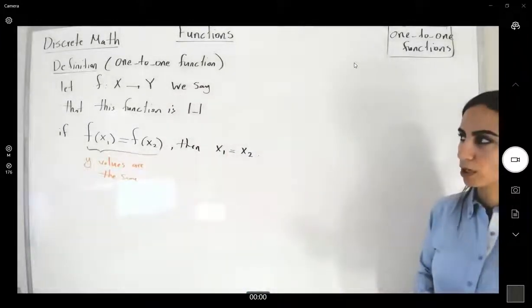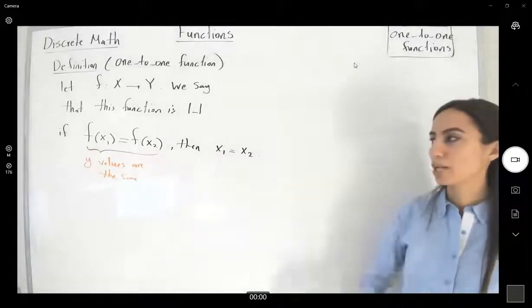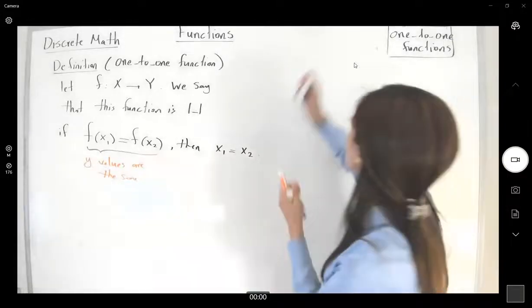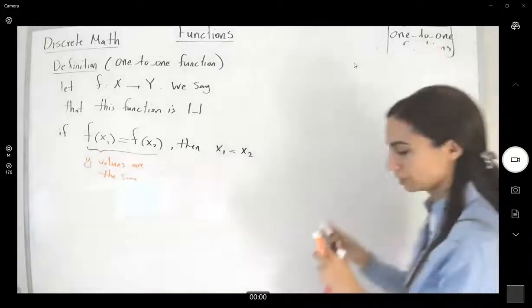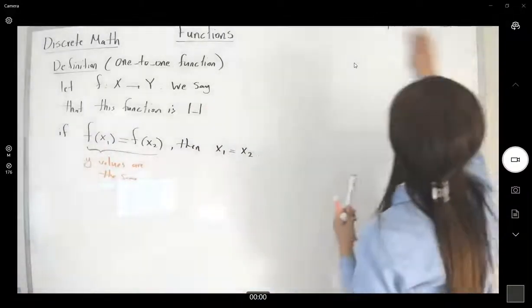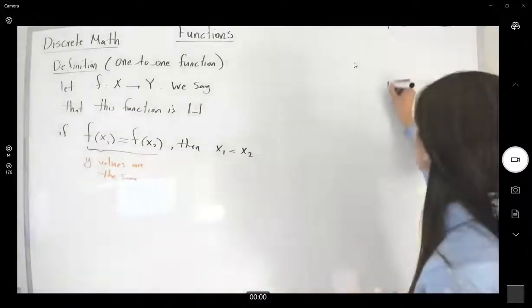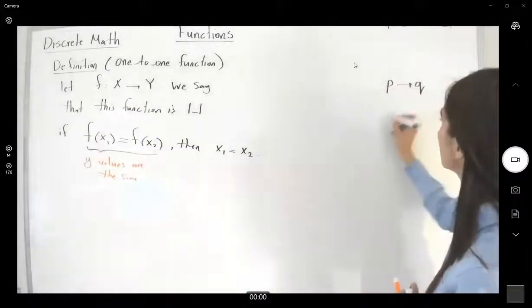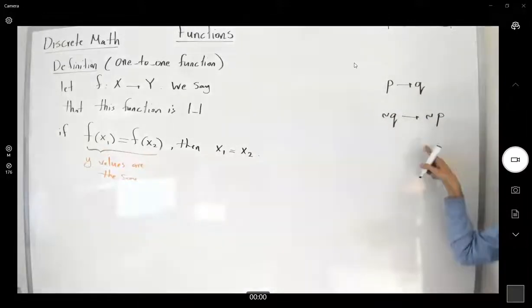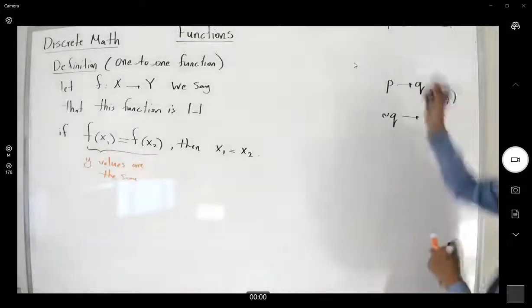Let us get back to previous chapters about p then q. Recall that if you have p then q, the contrapositive of p then q says: not q, then not p. These two are equivalent to each other.